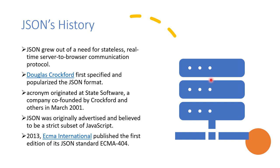JSON grew out of the need for a stateless real-time server-to-browser communication. It was first specified by Douglas Crockford and popularized as the JSON format. Its acronym originated at State Software, a company co-founded by Crockford and others in March 2001. JSON was originally advertised and believed to be a strict subset of JavaScript.